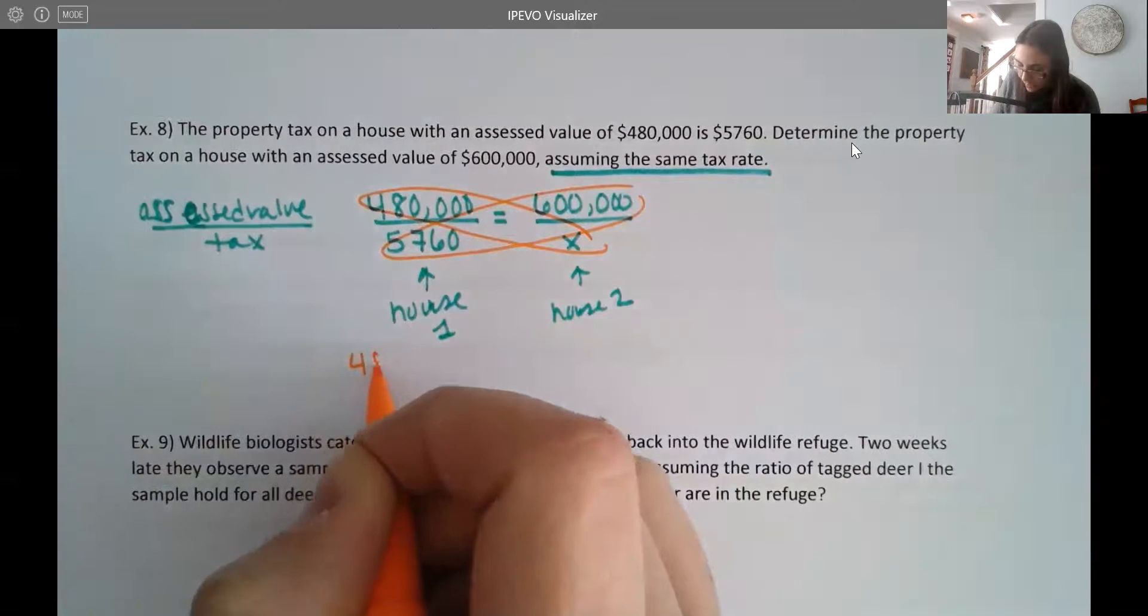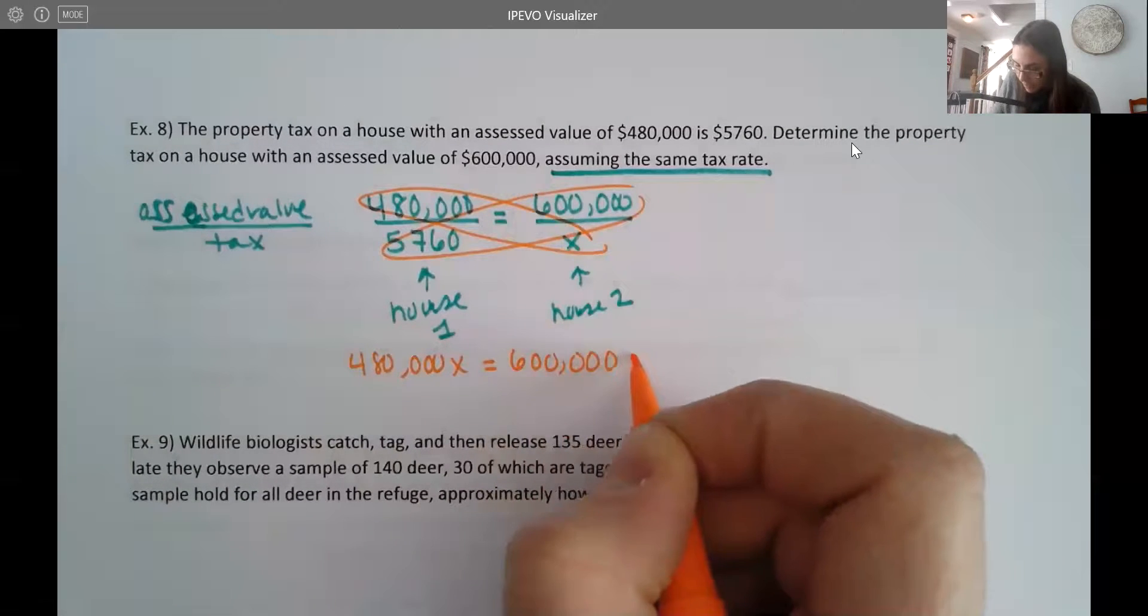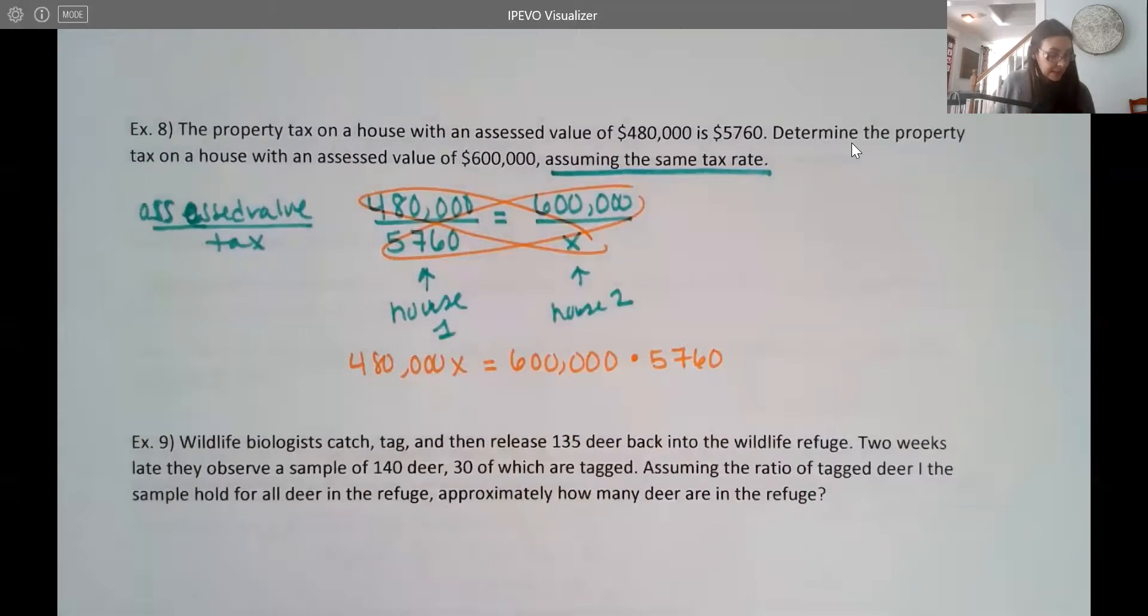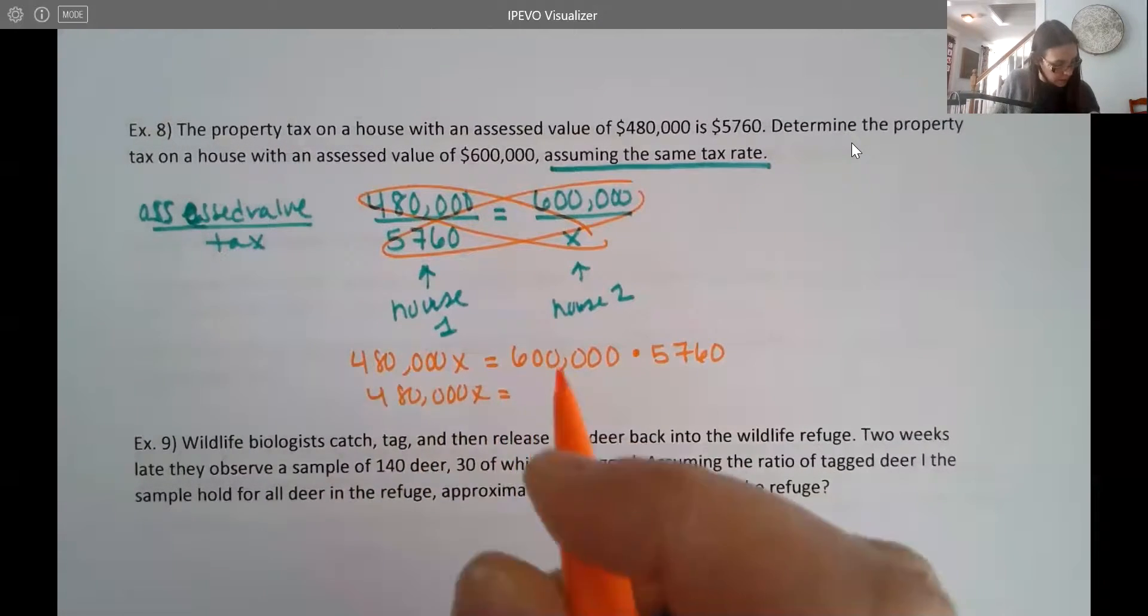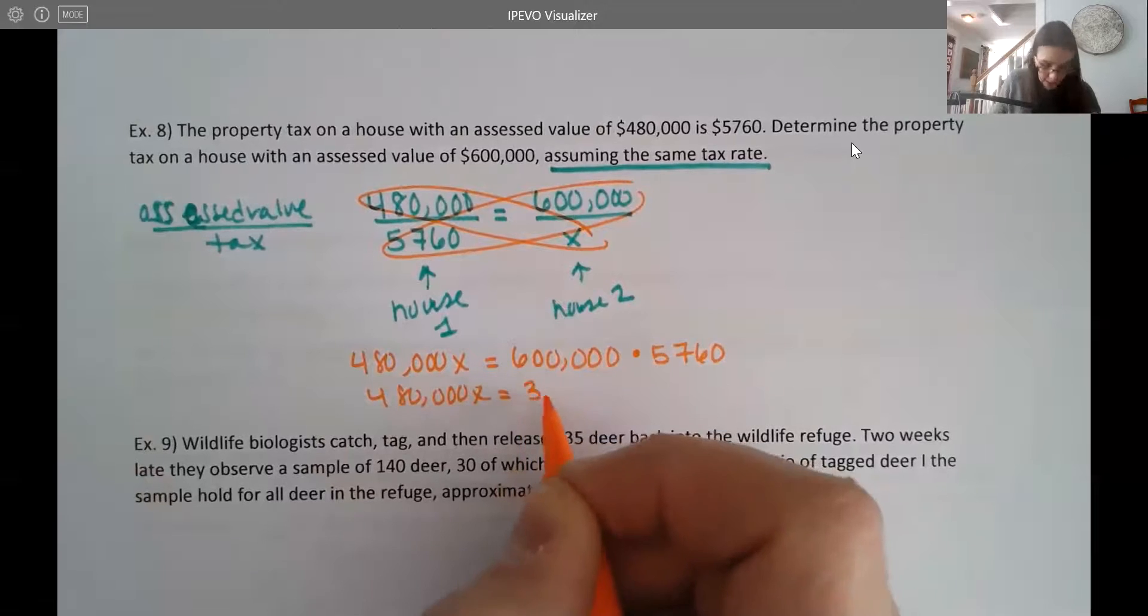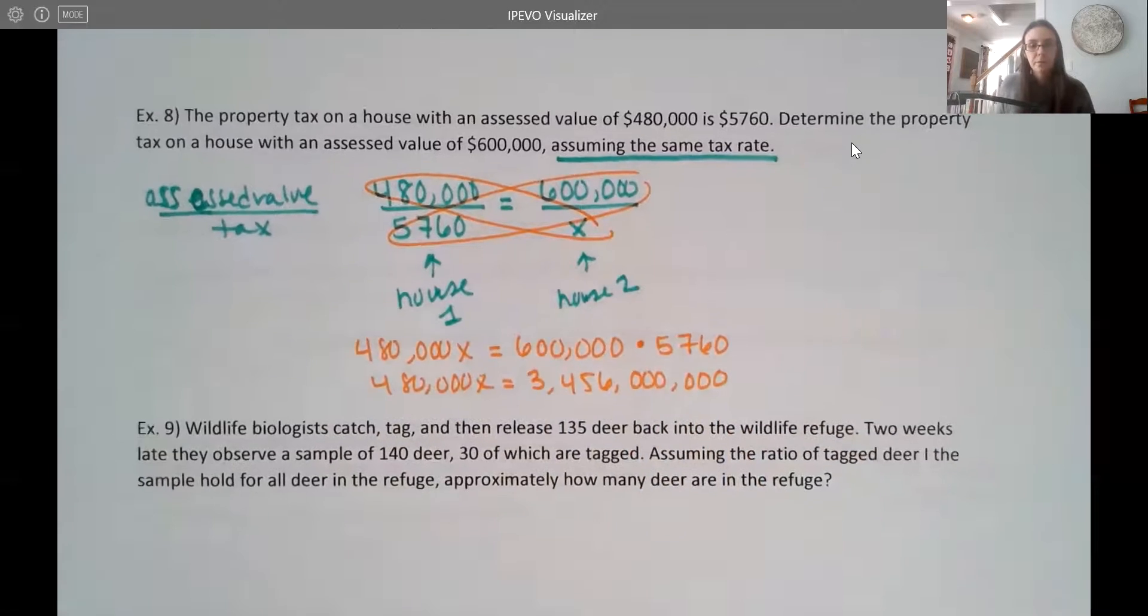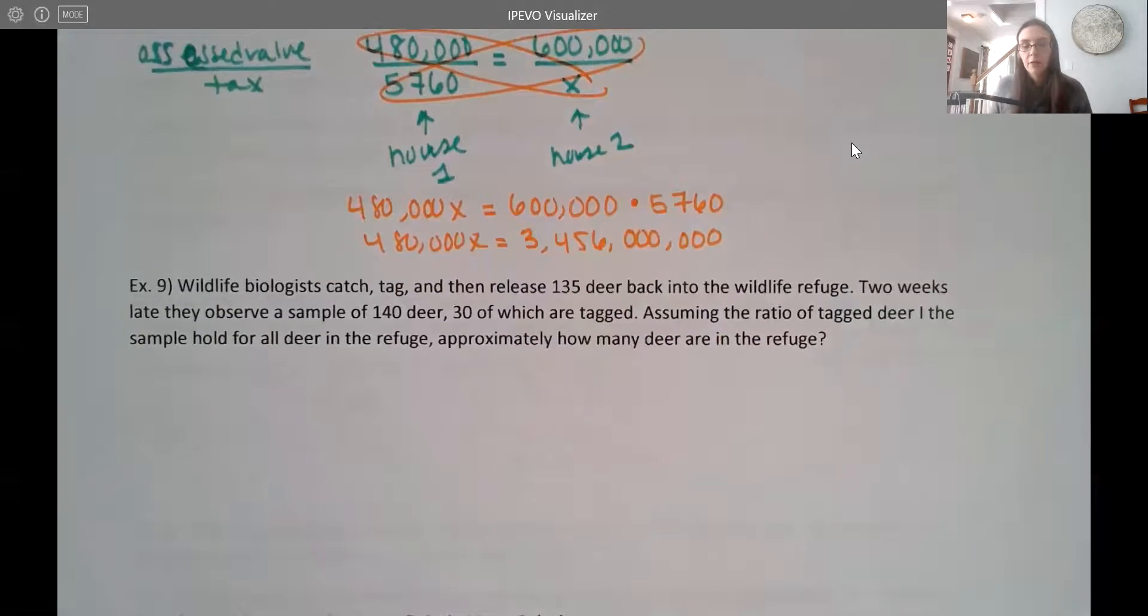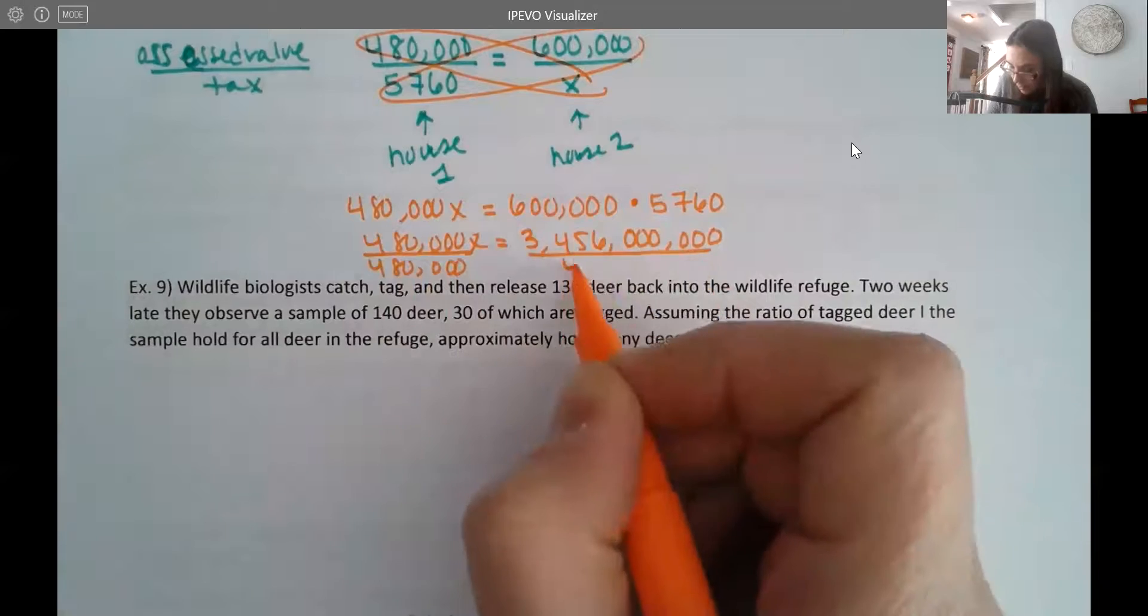So I'm going to have 480,000X. And then the other side, I have 600,000 times that 5,760. All right, let's see what we get here. We're going to get 480,000X equals 3,456,000. Now my X is all by itself. I just need to solve it. So I'm going to go ahead and divide both sides by that 480,000.